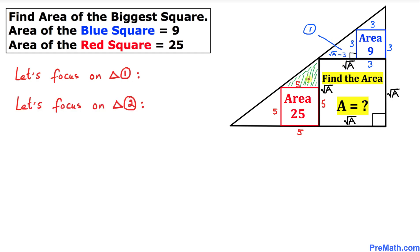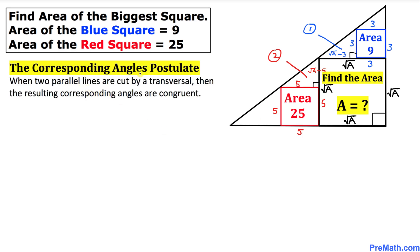Now let's focus on this shaded triangle — I'm going to call this triangle number two. This triangle is also a right triangle. The horizontal side is 5 units, and the vertical side is the whole length square root of a minus 5, giving us square root of a minus 5.